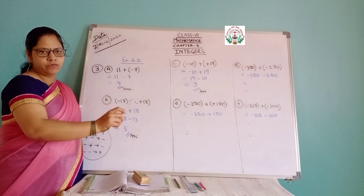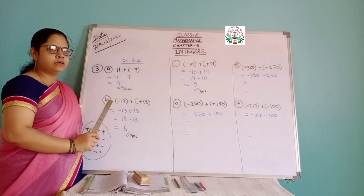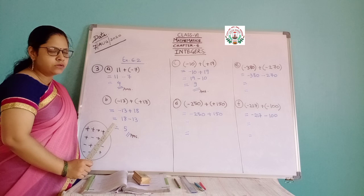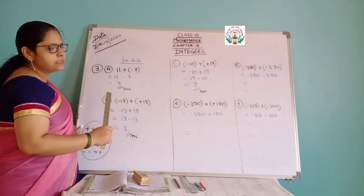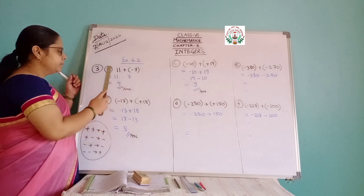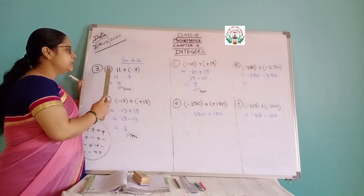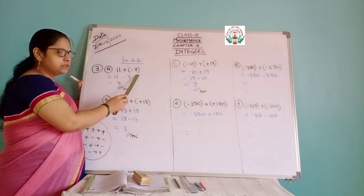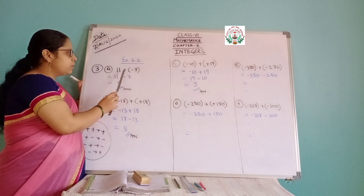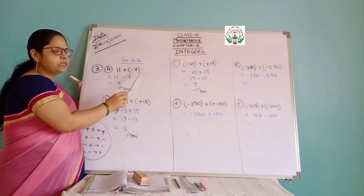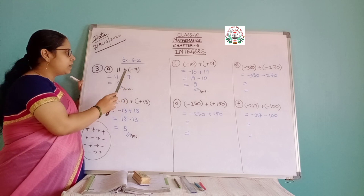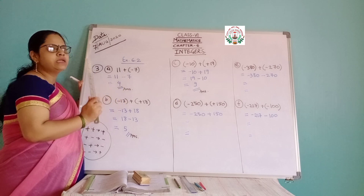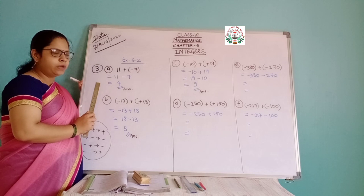More and larger equations will be coming in the next classes. So let us see what is here. Add is asked: 11 plus, in bracket, minus 7. Now, when you open this bracket, you have plus and minus coming together. So only one sign can be written in between.